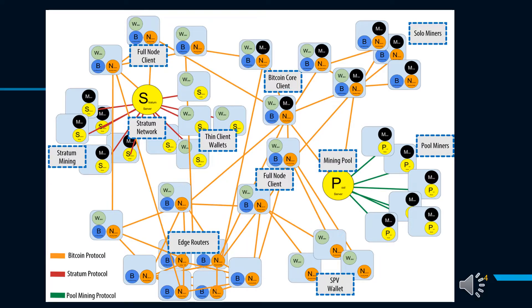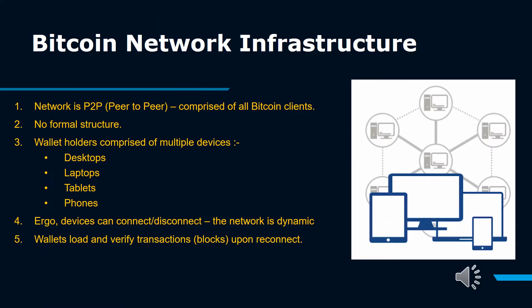The given figure shows the extended Bitcoin network showing various node types, gateways, and protocols. Here you can see how complex the networking in the Bitcoin network is.